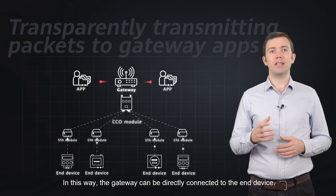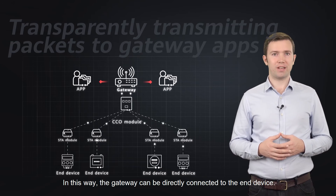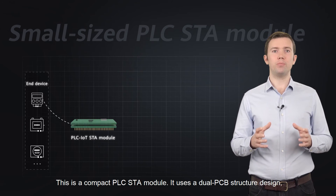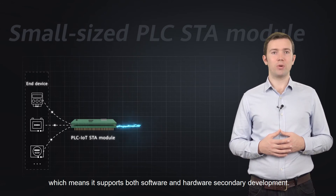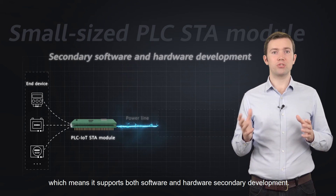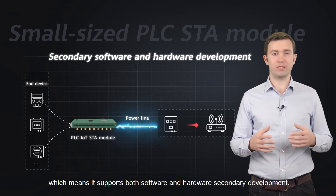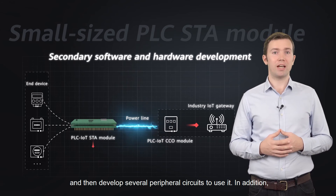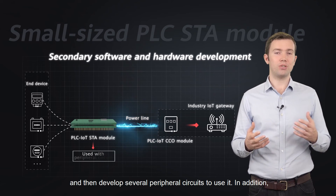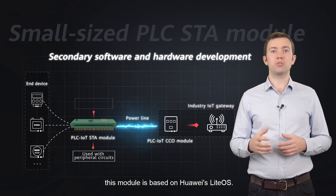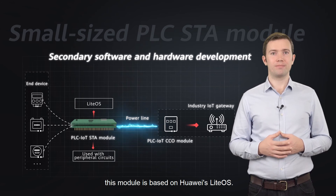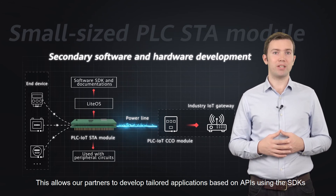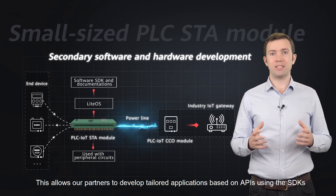In this way, the gateway can be directly connected to the N device. This is a compact PLC star module. It uses a dual PCB structure design, which means it supports both software and hardware secondary development. Our partners can integrate this module into their own boards and develop several peripheral circuits to use it. In addition, this module is based on Huawei's Lite OS, which allows our partners to develop tailored applications based on APIs, using the SDKs and referring to operation guides provided by Huawei.